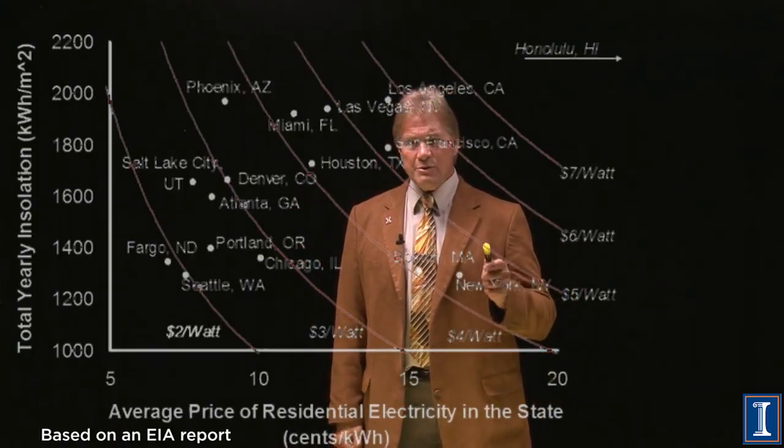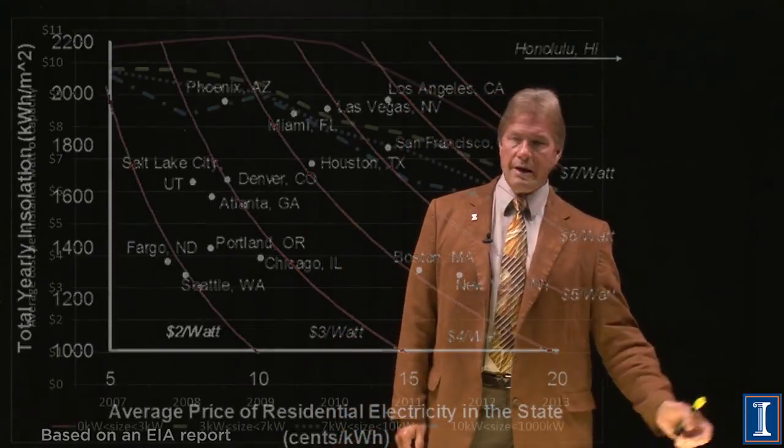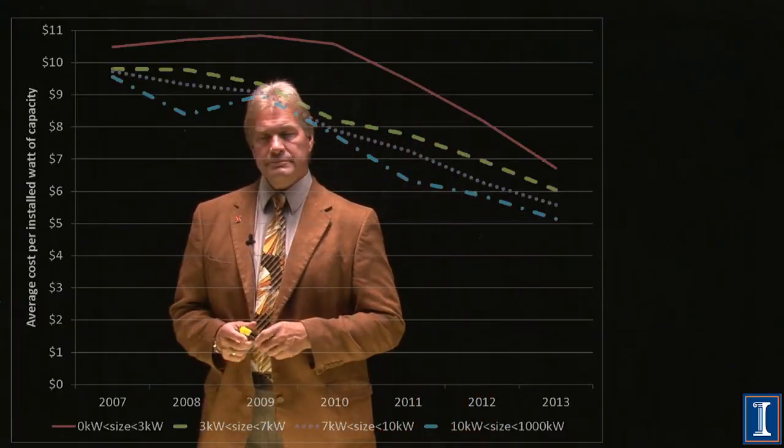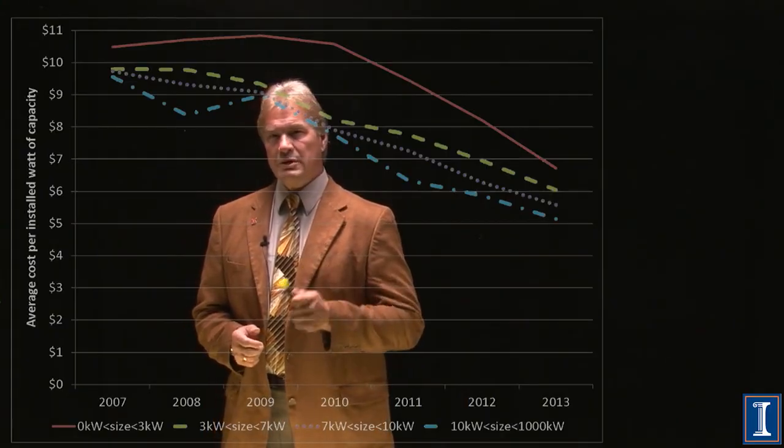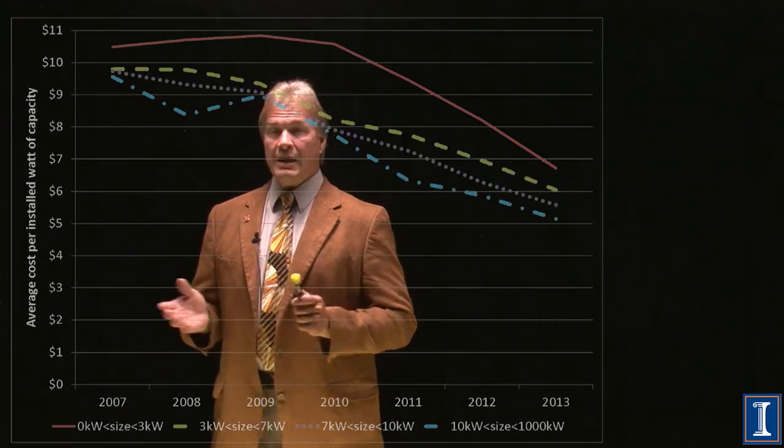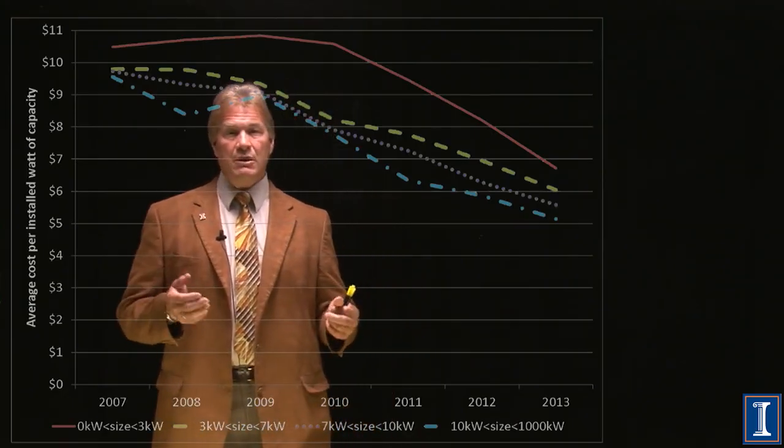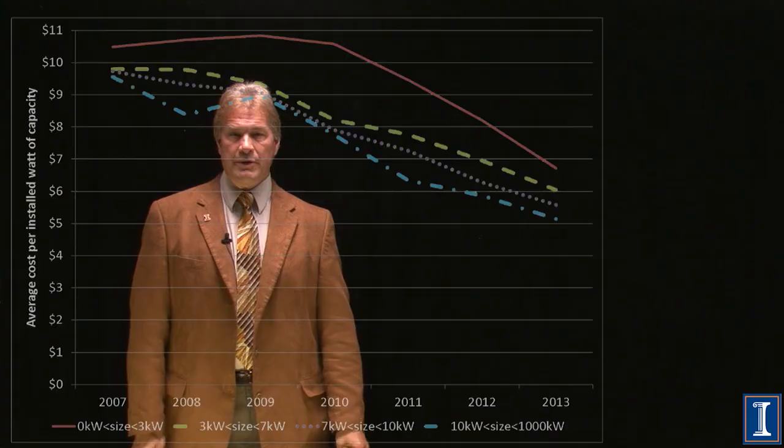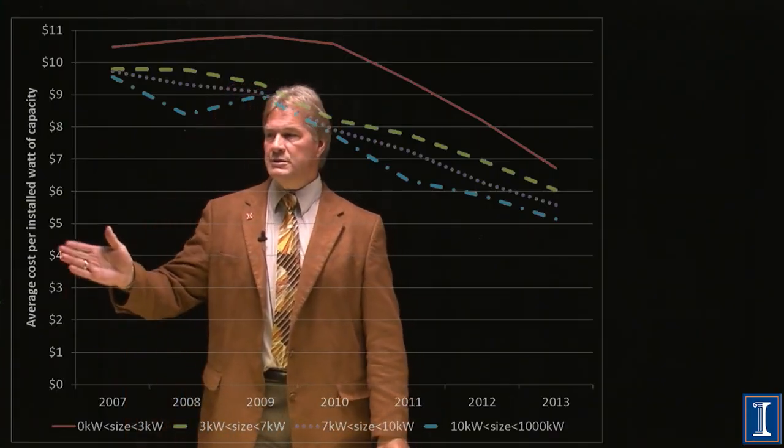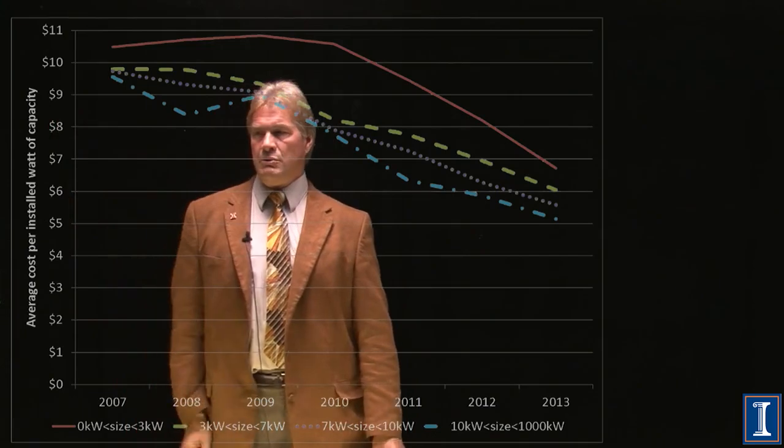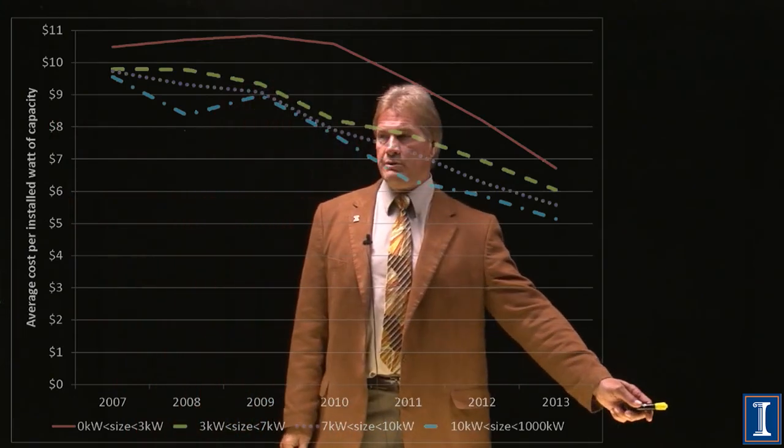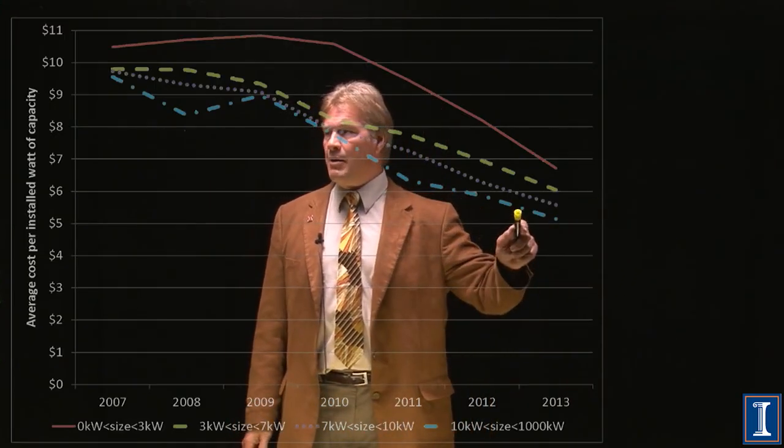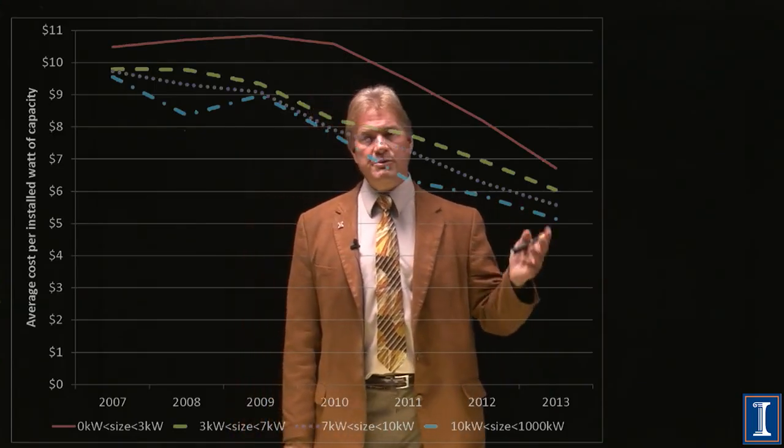But what I gave you before was the price per peak watt at the manufacturer, not the price of installed capacity. And the economic numbers really need to take into account the actual amount of money you spent to get those panels in operation. This is an average price of installed solar power. And while it only goes to 2013, I'll tell you the current numbers, notice that this is up in the six to seven dollars per peak watt.